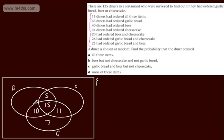40 diners had ordered beer. We've got 5, 15, and 10, which is going to give me 30. So this one is going to be 10.